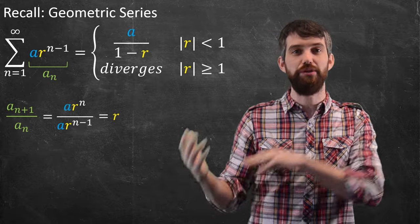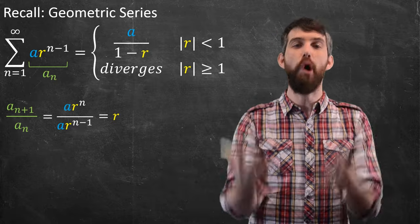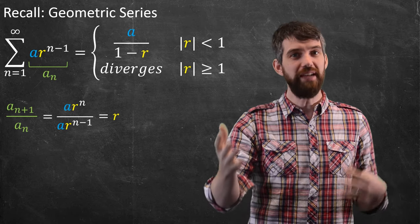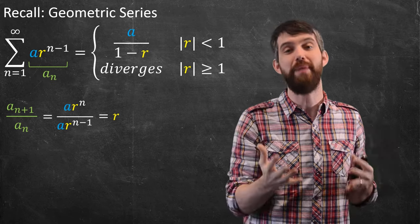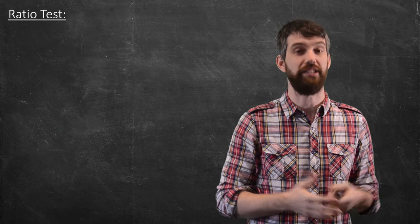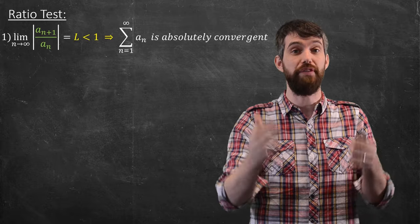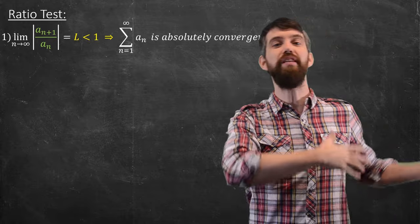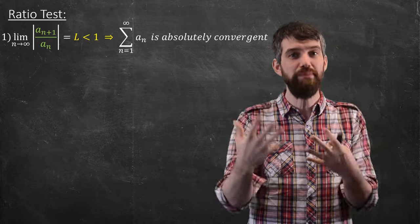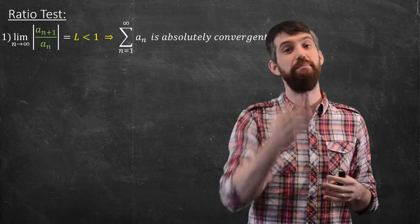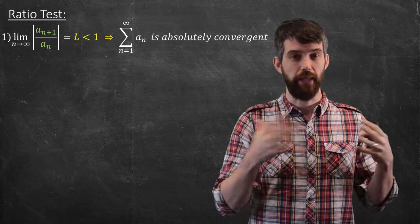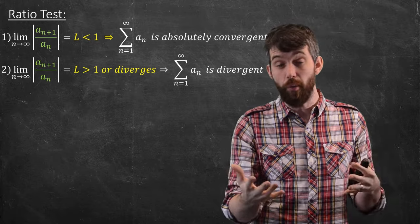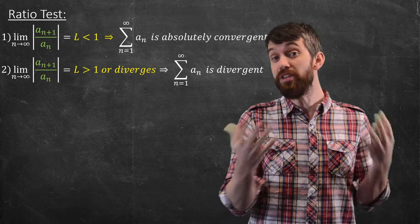We're going to use this as a model for our ratio test and root test. We're going to say: what if a series is not a geometric series, but in the limit as n gets really large it starts to look a lot like a geometric series — then maybe it behaves in a similar way. The ratio test considers the same ratio a_{n+1} to a_n. If that ratio in the limit as n goes to infinity becomes a number L less than 1, it converges. If the limit is a number greater than 1, the series diverges.